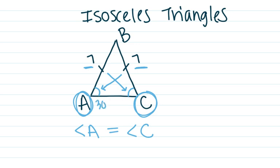So if they gave me angle A, say angle A is 30 degrees, I also know angle C is also going to be 30 degrees. So I can get those two angles of that triangle.